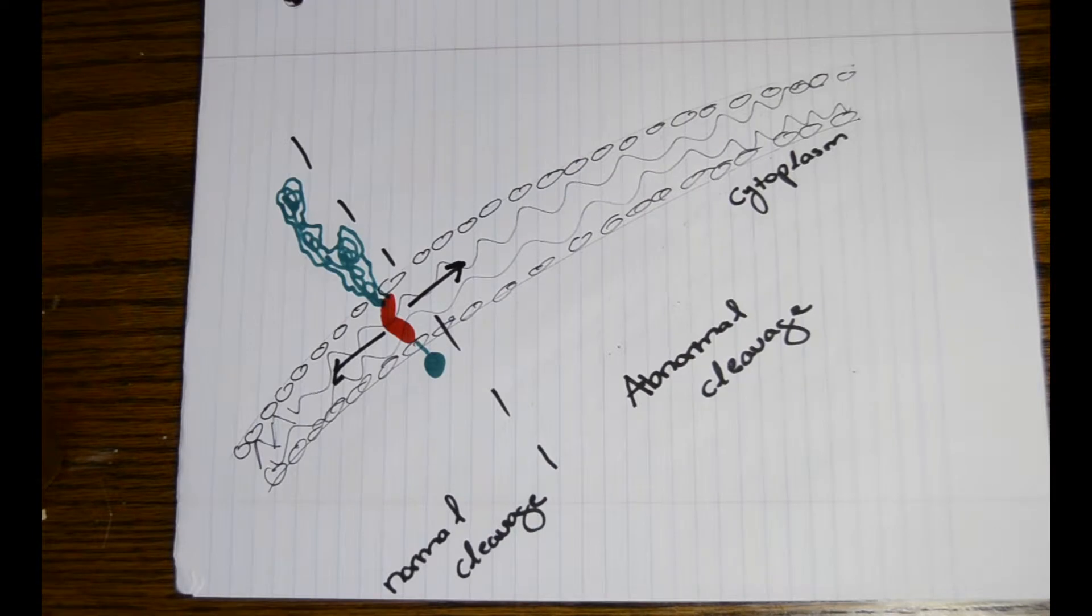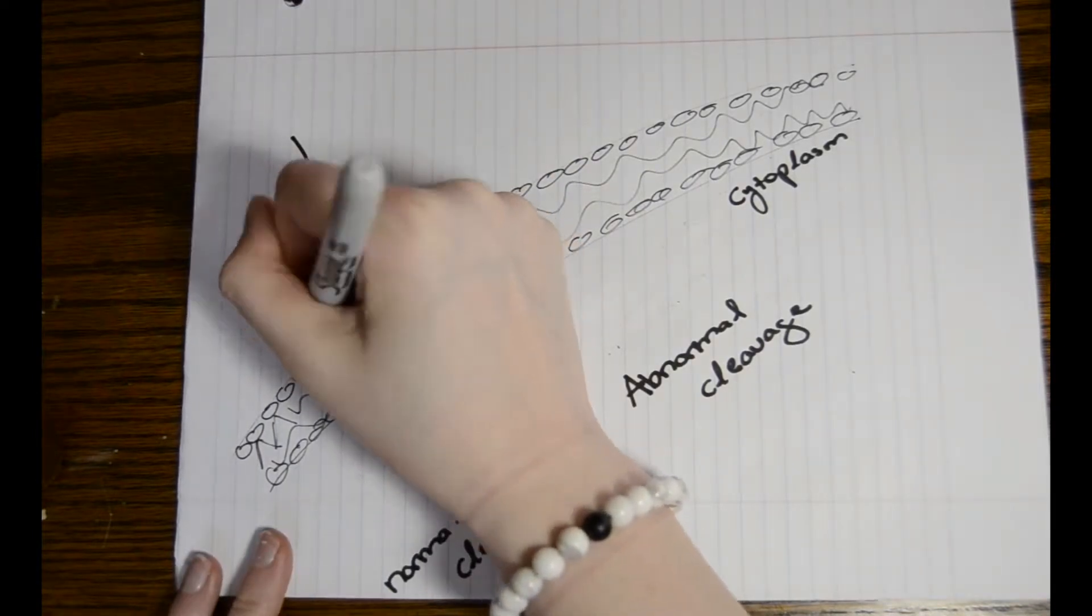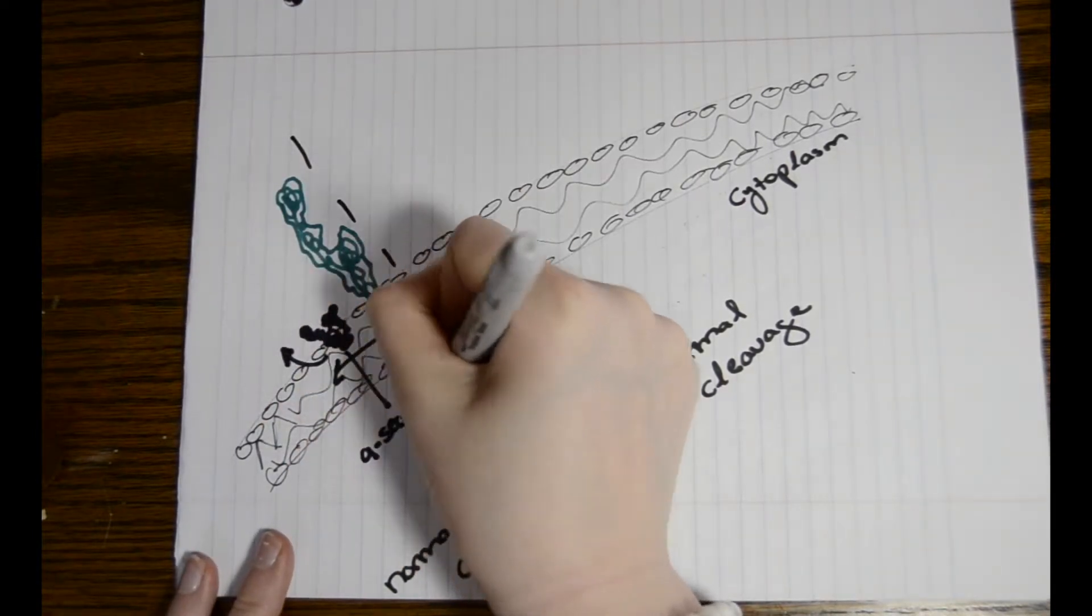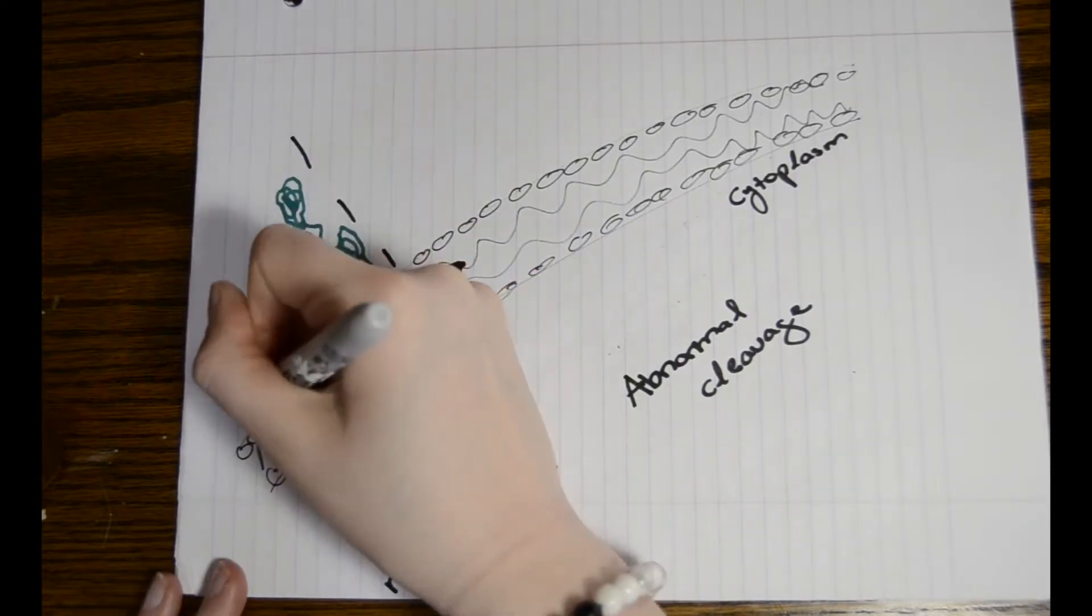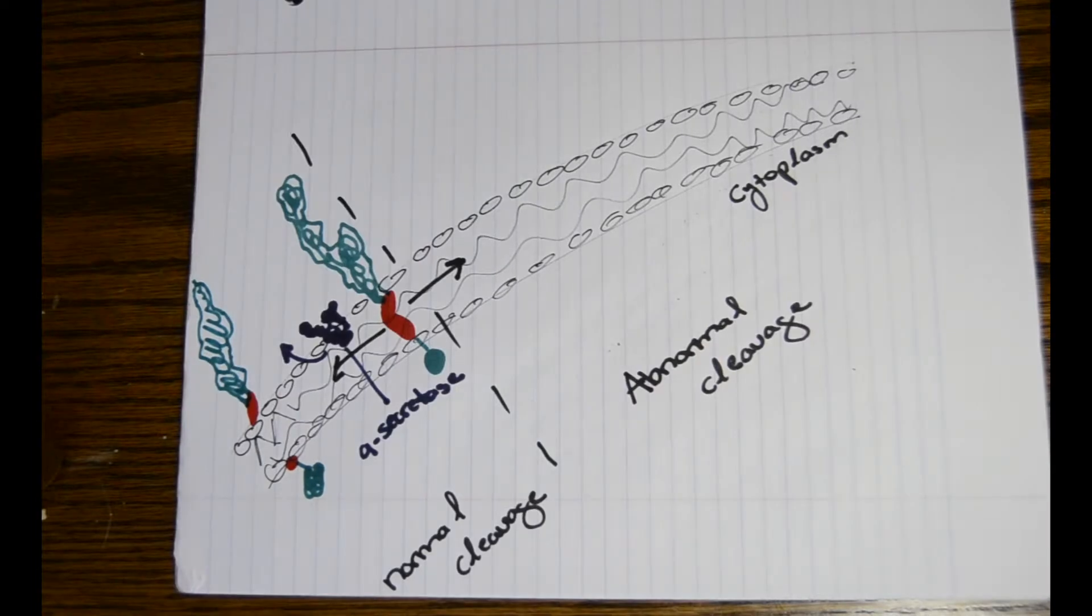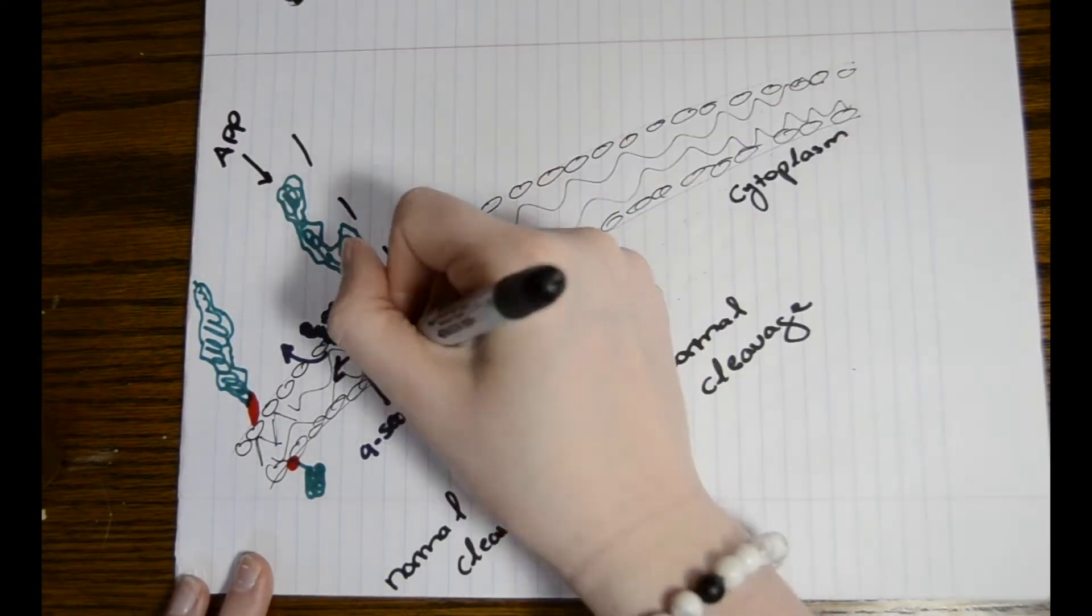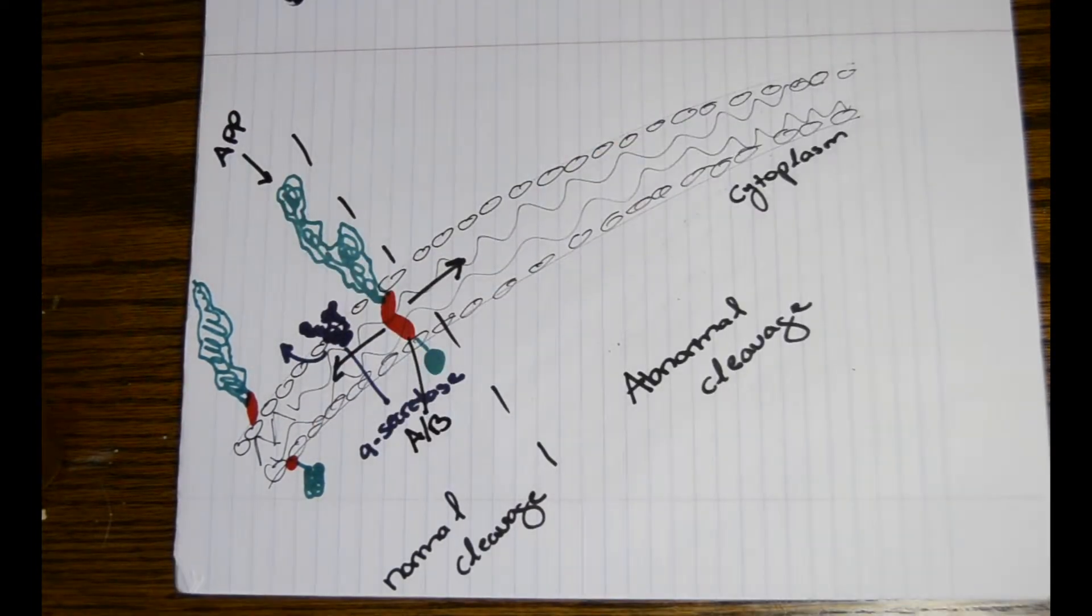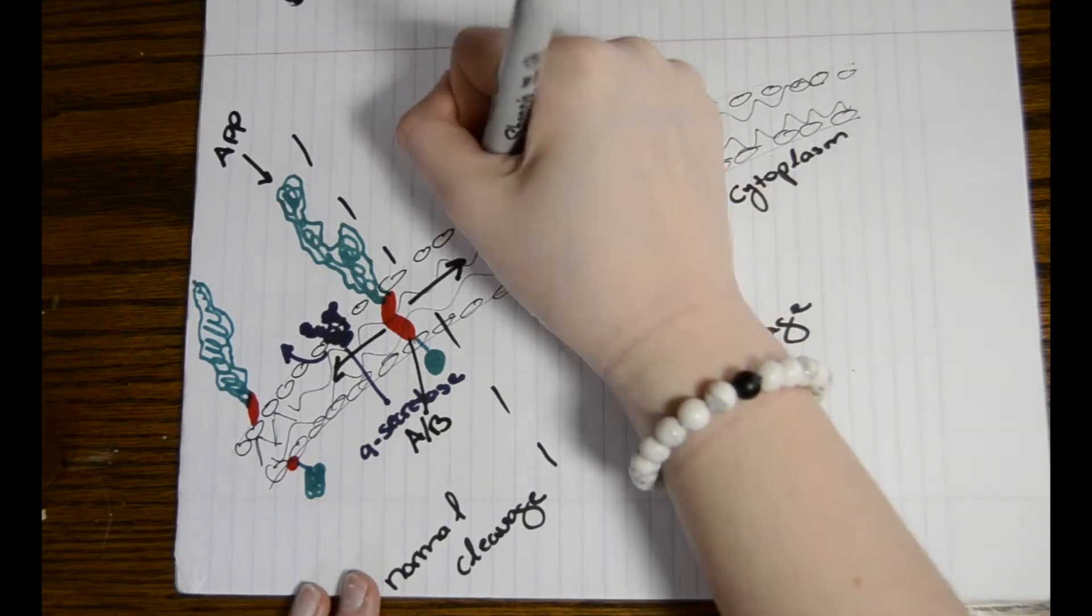Starting off with the normal cleavage, APP, the green-stressed bluish structure, is broken by alpha-secretase, which causes amyloid beta peptide, the red structure, to stay attached to APP and not form plaques around the neurons. This might suggest a type of treatment for Alzheimer's patients.